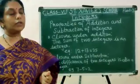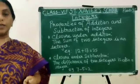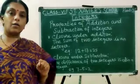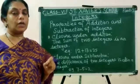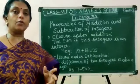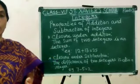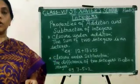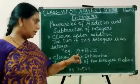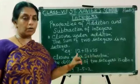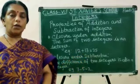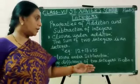Now we will go for the properties of addition and subtraction of integers. The 1st property is closure under addition: the sum of 2 integers is an integer. Any 2 integers when you add them, the answer you get is also an integer. Example: 12 and 13 are both positive integers. When added, you get 25, which is also an integer.